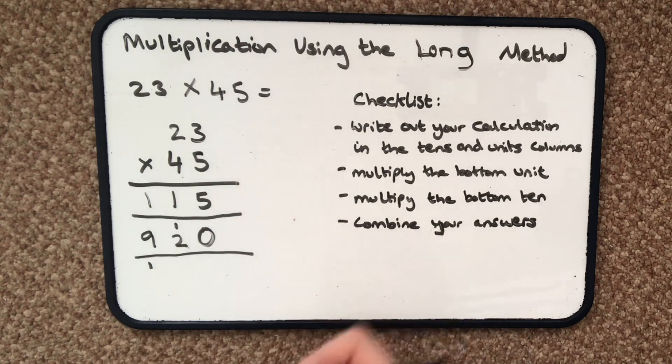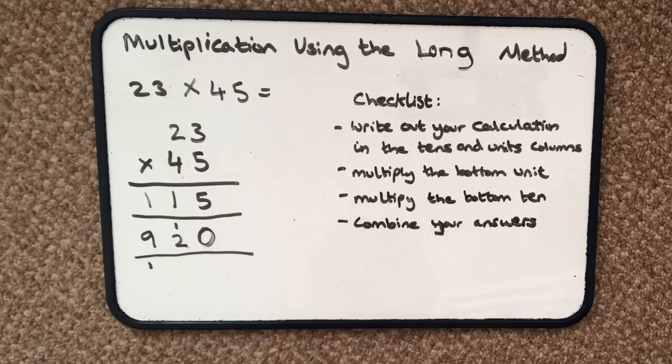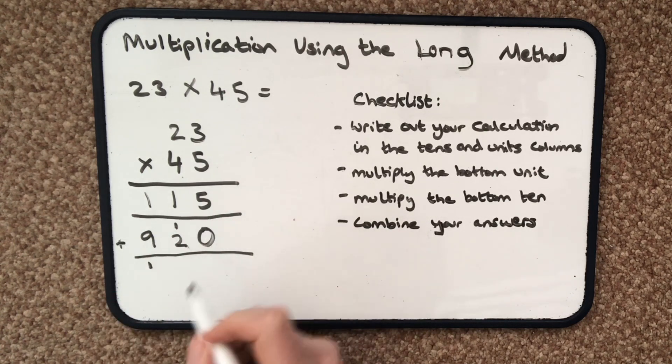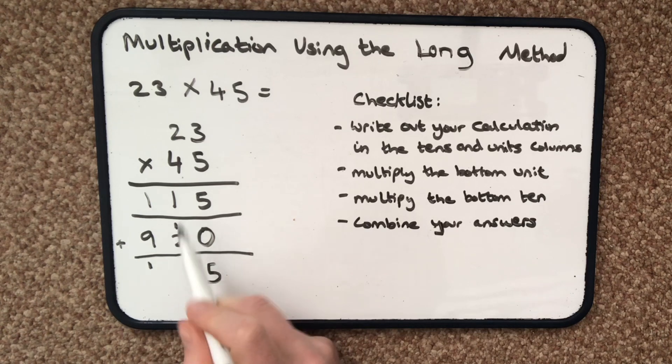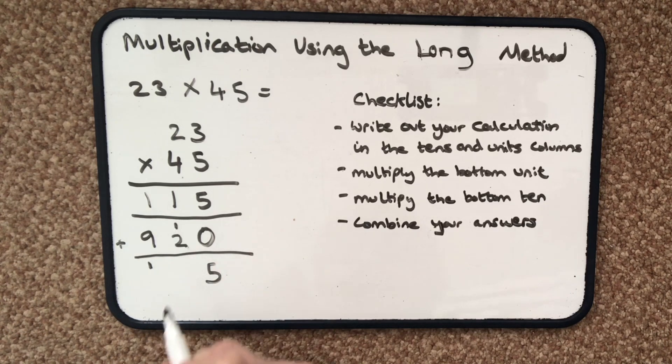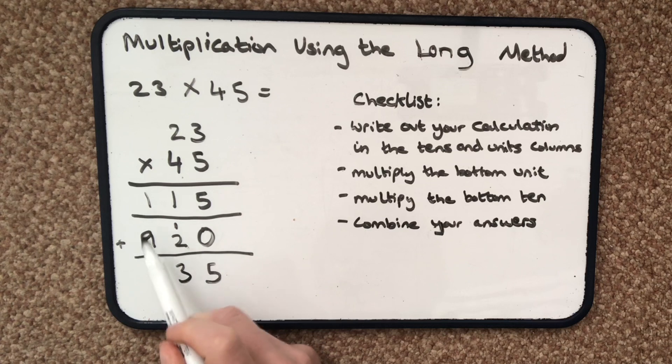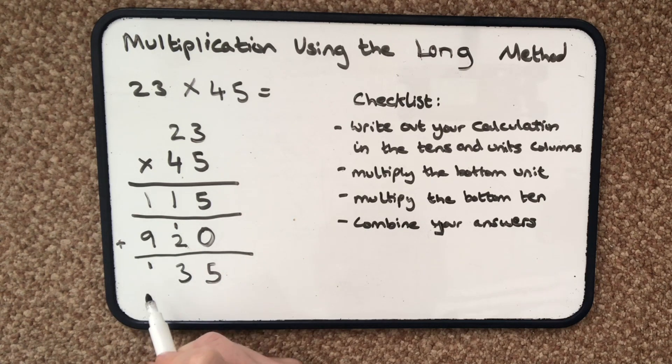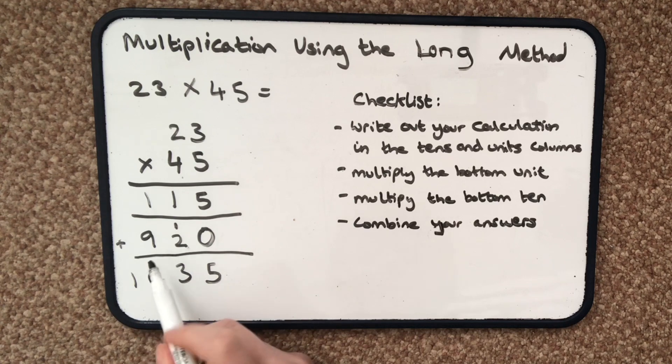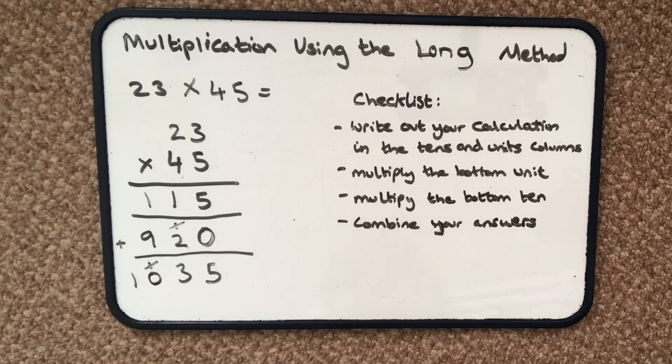So I'm going to use column addition to add these two rows together. So 5 add 0 units equals 5. 2 add 1 ten is 3 tens, and 9 add 100 equals 10 hundreds which actually equals a thousand. If you want to you can cross these out as you go along if you've added them so you don't get confused.